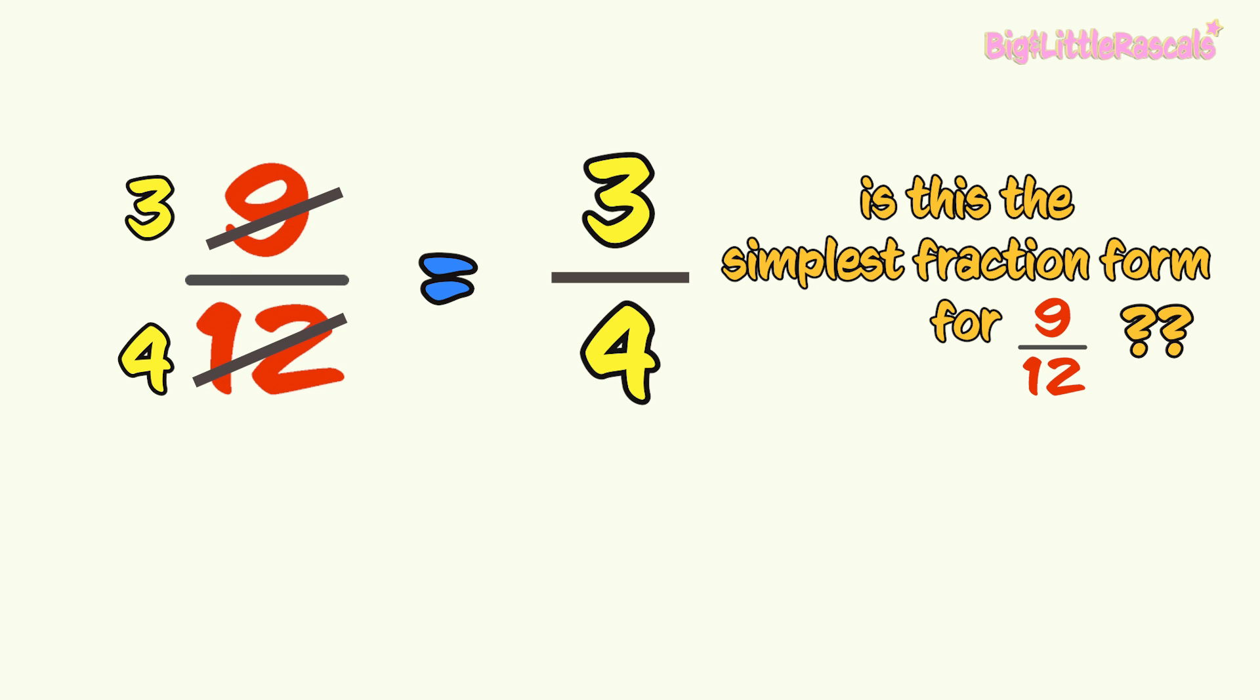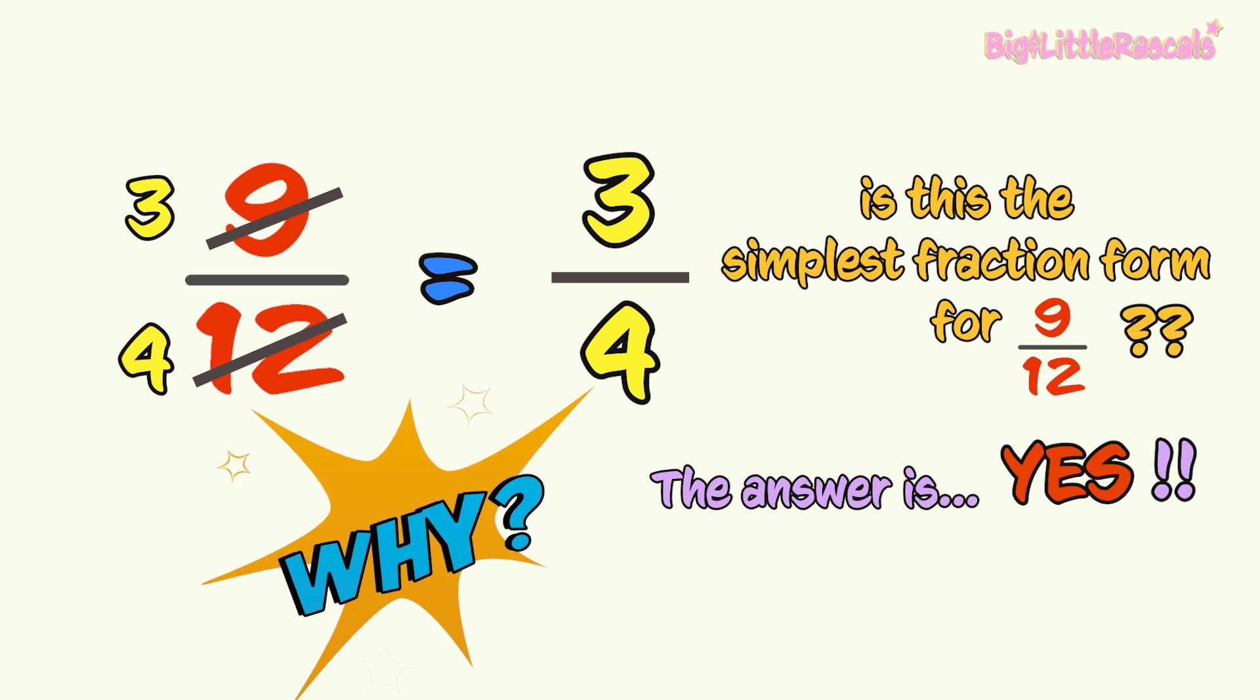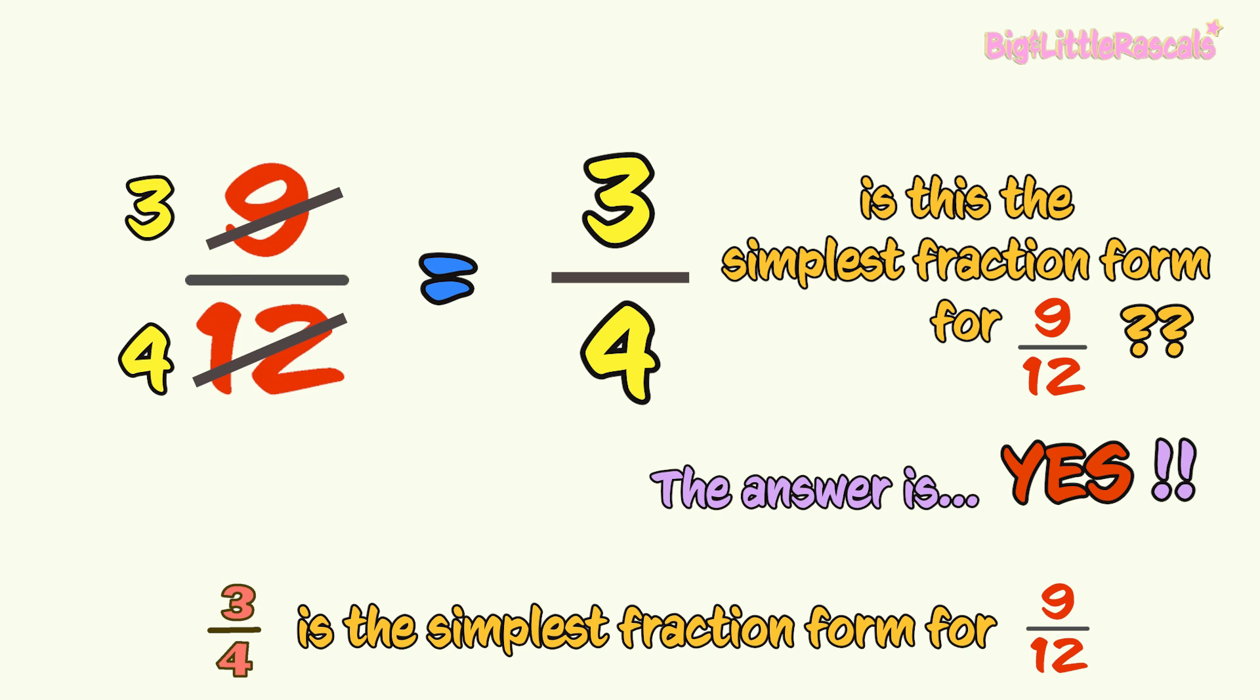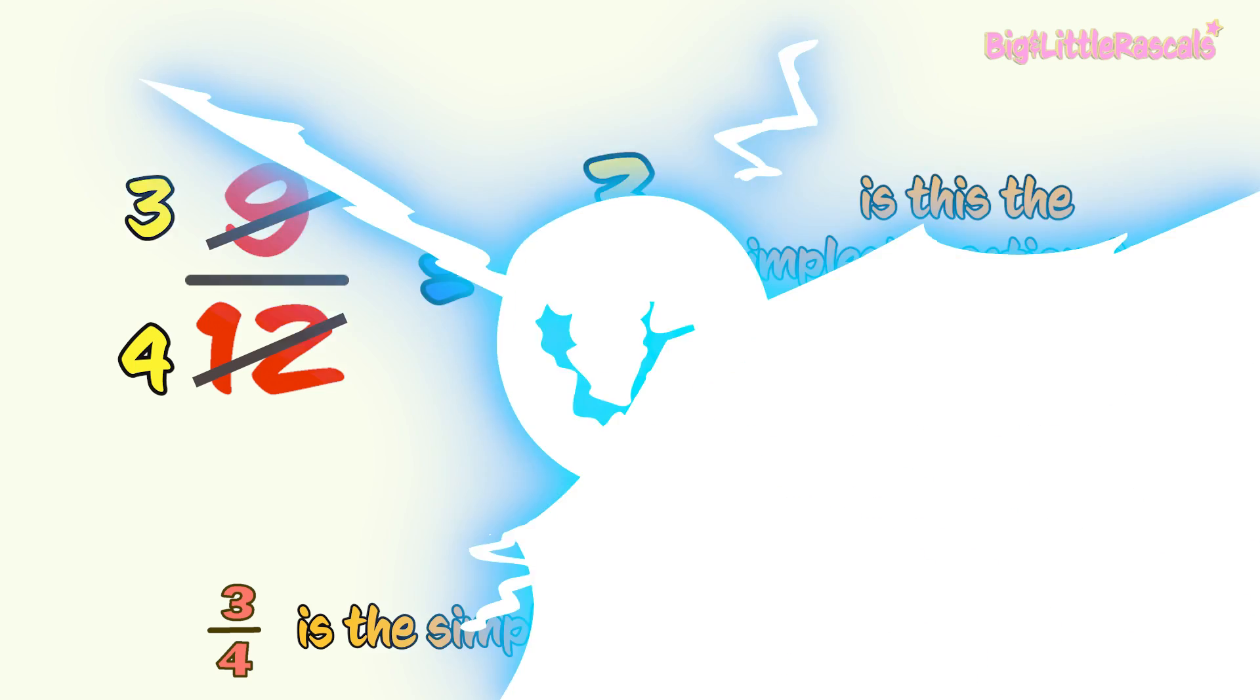But, is 3 out of 4, or three-quarters, the simplest fraction can be for nine-twelfths? The answer is yes! Why? Because you can't divide the top and bottom number any further without giving whole number as the result. The bottom number 4 is not dividable by the top number 3, and both don't have any common factor anymore that can be used to divide them and gives us exact division. So, three-quarters is the simplest form for nine-twelfths.